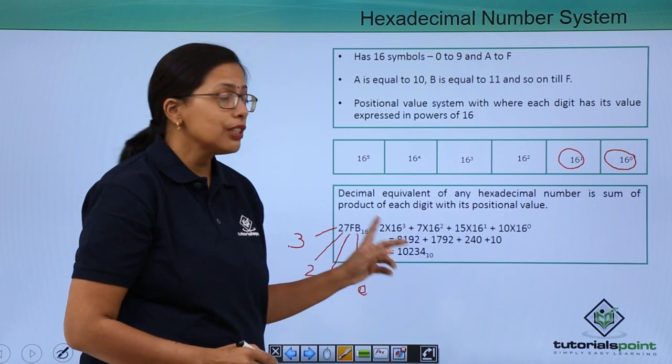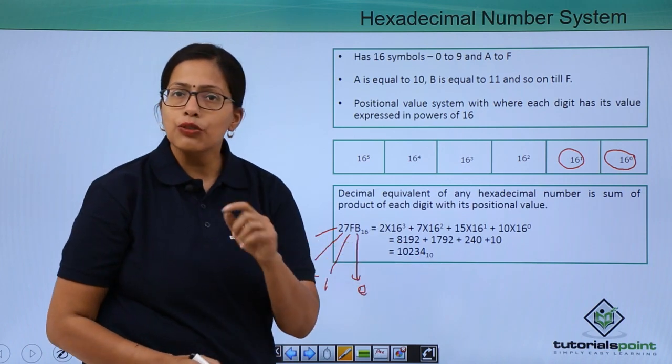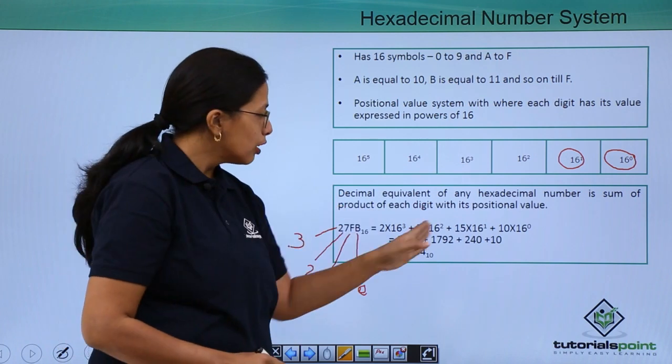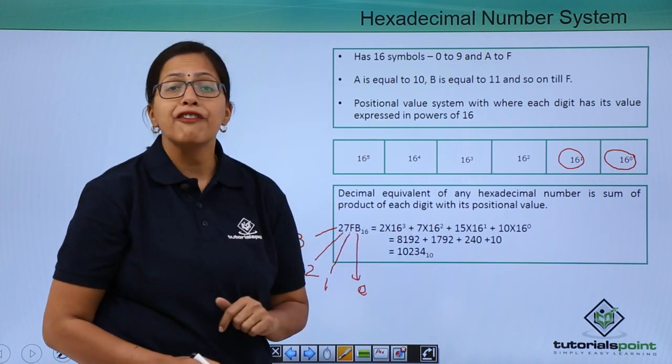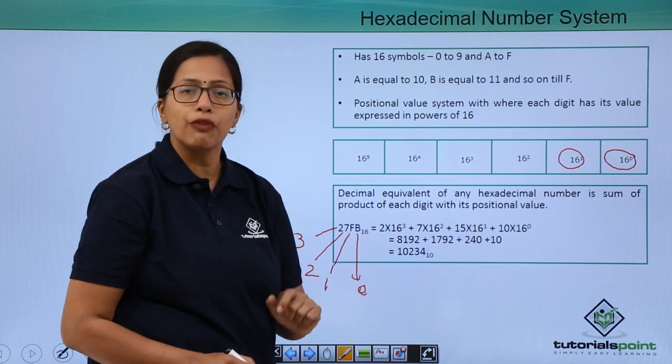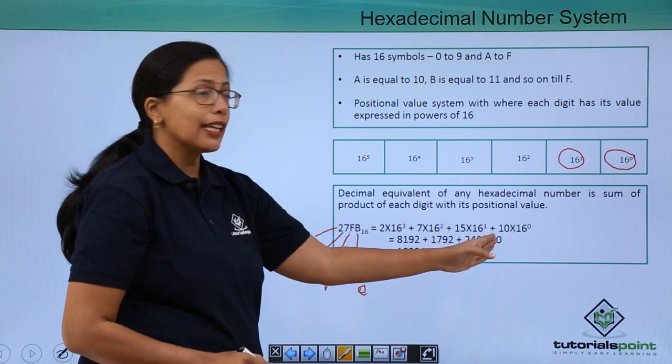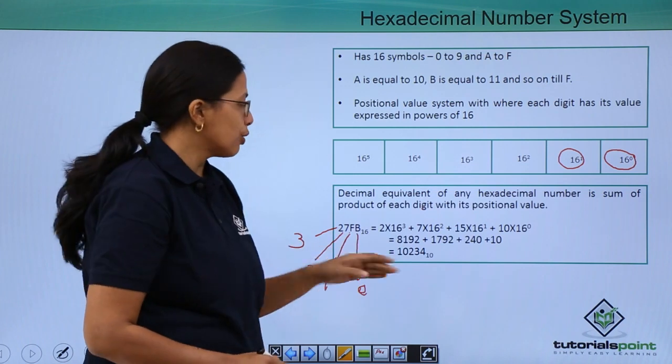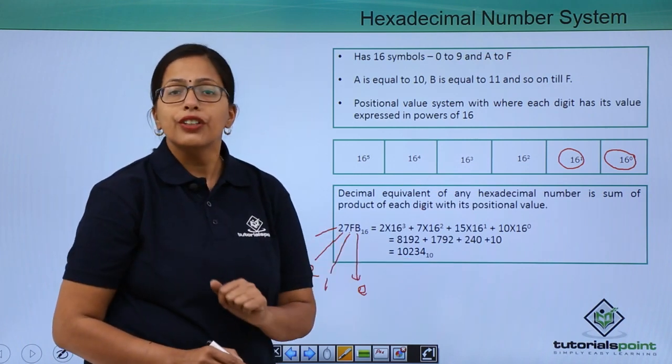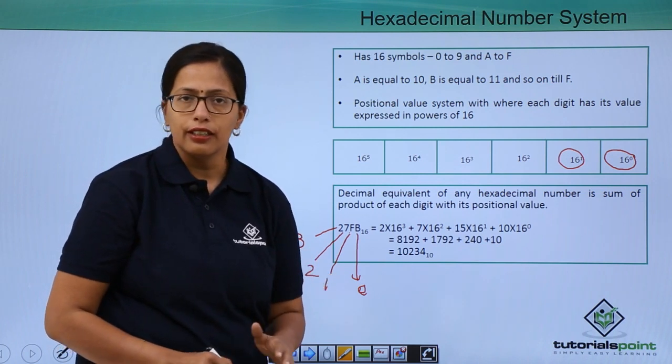So, how will it convert? 2 into 16 to the power of 3, 7 into 16 to the power of 2. I have F. F is equivalent to 15, so it will be 15 into 16 to the power of 1. Similarly, B is 11, so 11 into 16 to the power of 0. When I calculate, I get 10,234 to the base of 10.